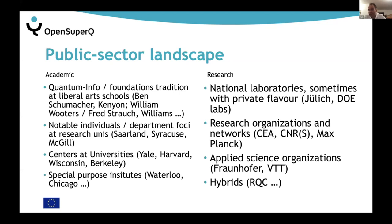On the public sector research side, we have national labs — typically big infrastructures, many with a nuclear history like Jülich and most DOE labs. In Europe specifically, we have research organizations where subunits are smaller but as a network are very powerful, such as the CEA and CNRS in France, the INFN in Italy, and the Max Planck Society in Germany — truly research-focused places. There are also applied science organizations with an industrial drive, such as Fraunhofer in Germany and VTT, and various hybrids.